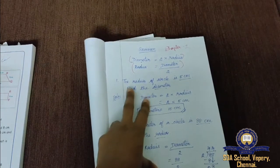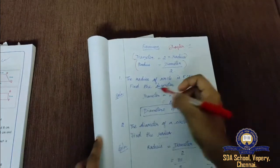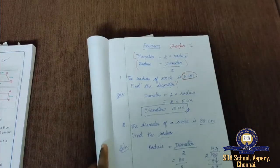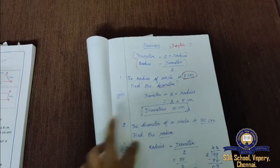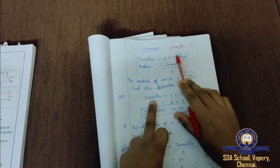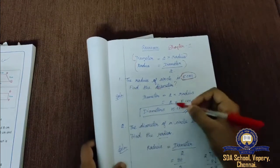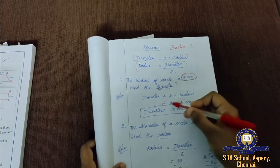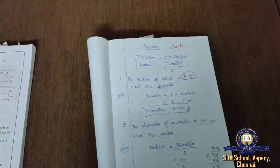First sum: the radius of a circle is 5 cm. Find the diameter. We are given radius as 5 cm and need to find the diameter. Formula: diameter = 2 × radius. So diameter = 2 × 5 cm = 10 cm. We have found the diameter as 10 cm.